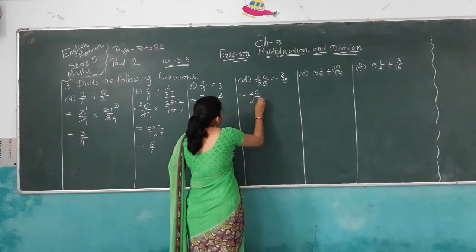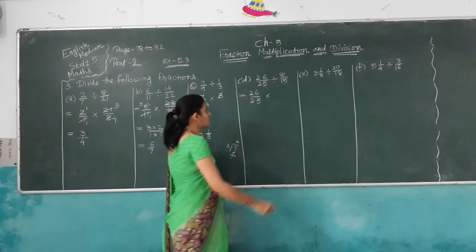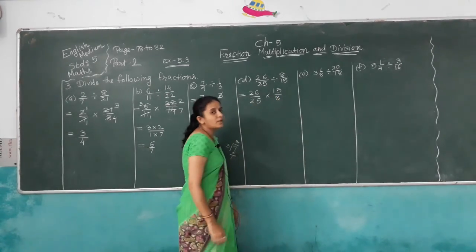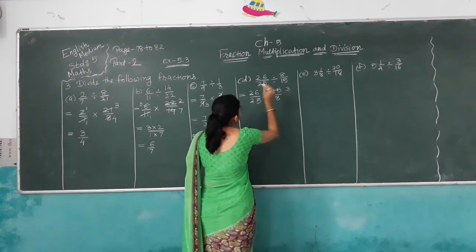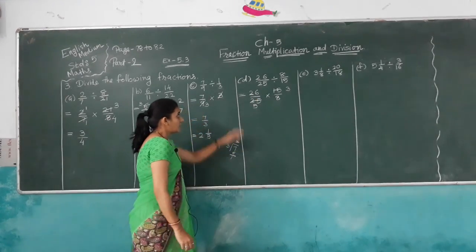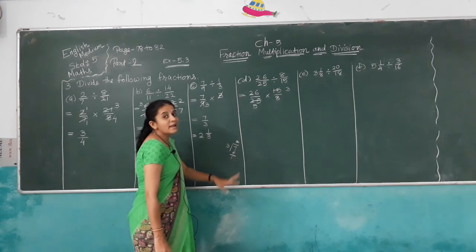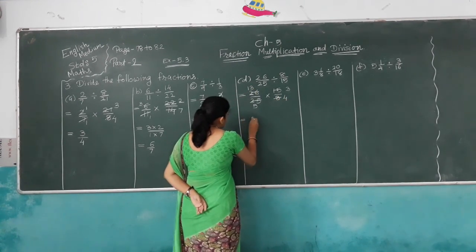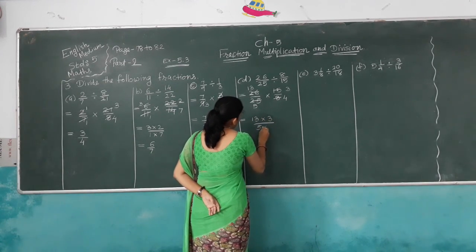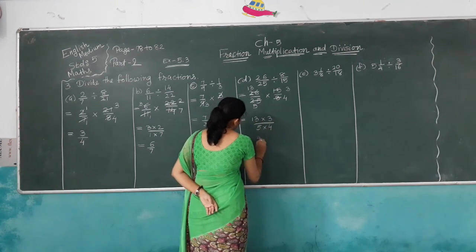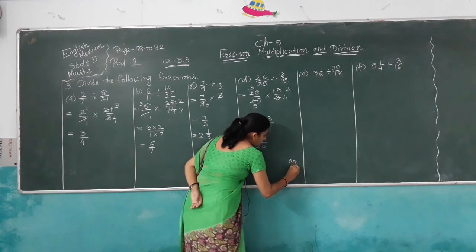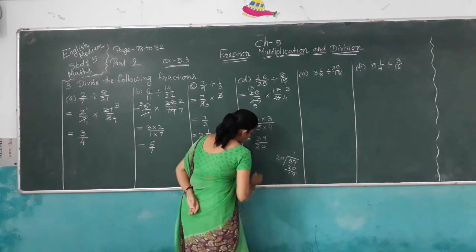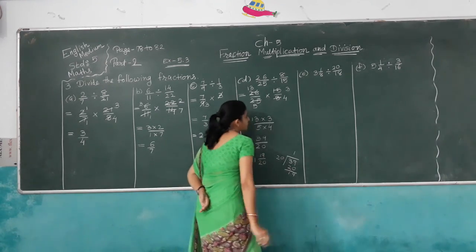Next: 26/25 divided by 8/15. Multiply by the reciprocal of 8/15, which is 15/8. Cancel: 25 and 15 share factor 5, giving 5 and 3. Also 26 and 8 share factor 2, giving 13 and 4. So 13×3 over 5×4 = 39/20. Converting: 20 goes into 39 once remainder 19, giving the answer 1 and 19/20.